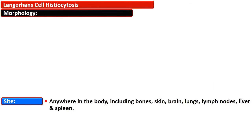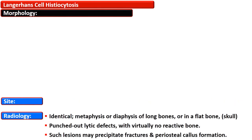These lesions can appear anywhere in the body including bone, skin, brain, lungs, lymph nodes, liver, and spleen. Radiologically, lesions involve the metaphysis or diaphysis of long bones or flat bones such as the skull. There is a punched-out lytic defect with no reactive surrounding bone formation. Such lesions may precipitate fracture and lead to formation of periosteal callus.